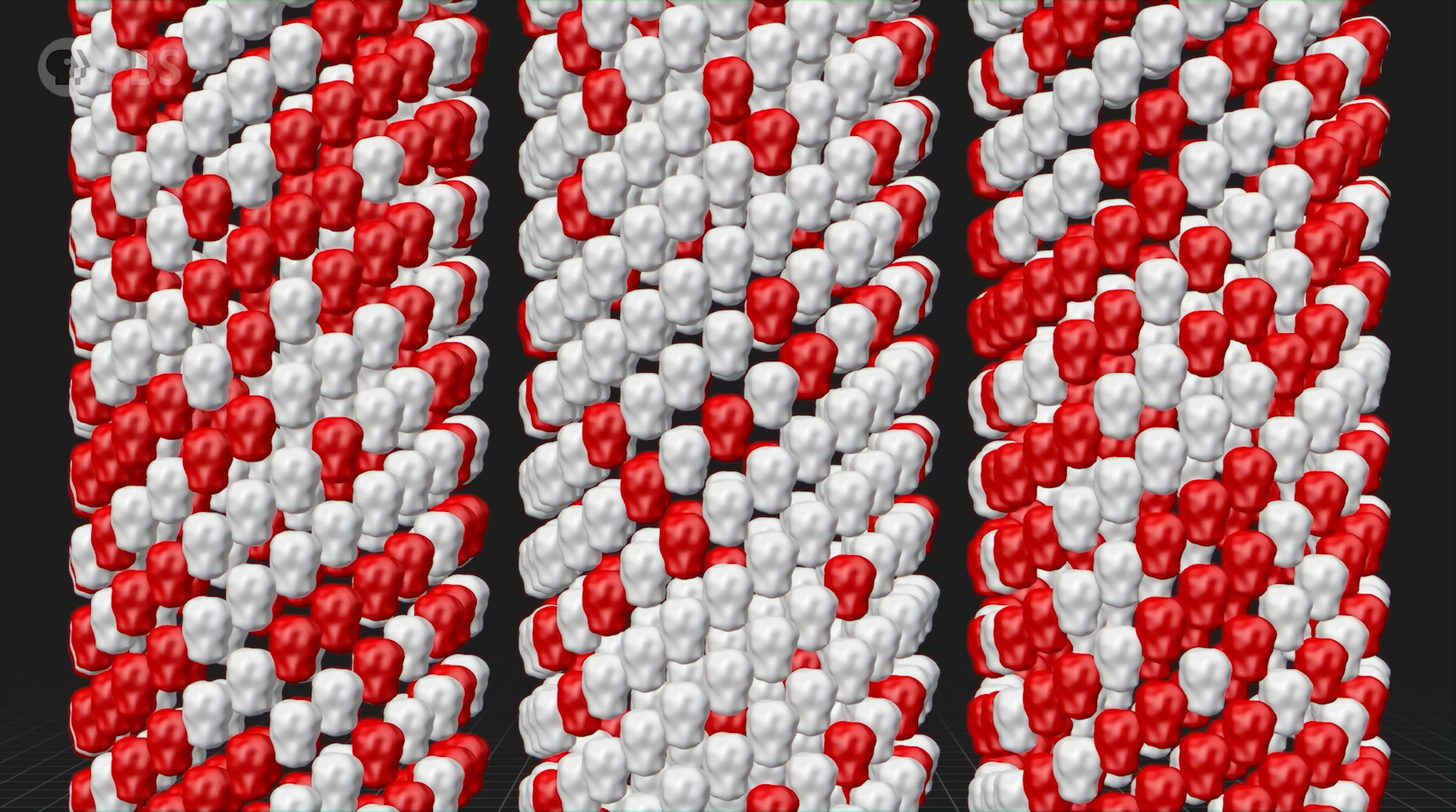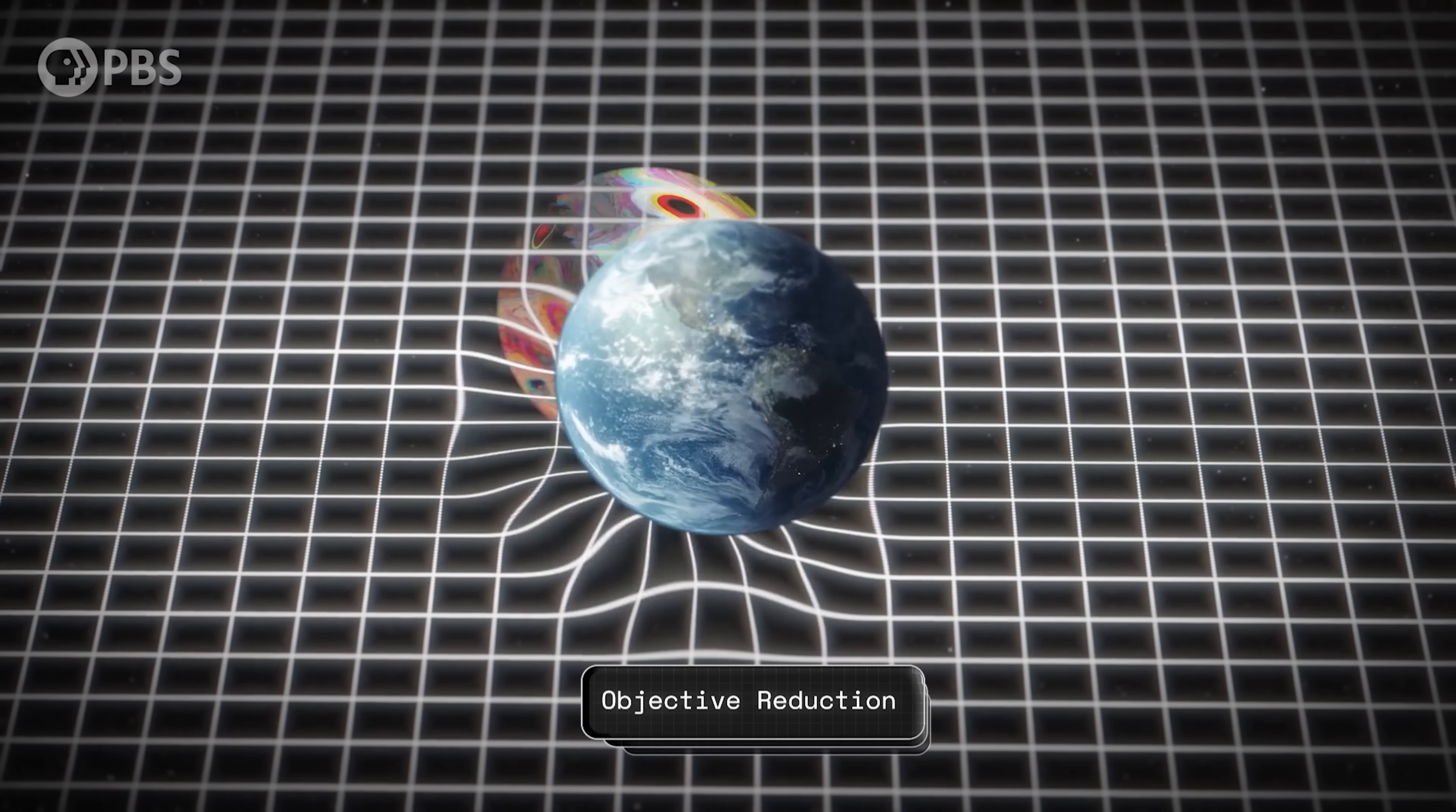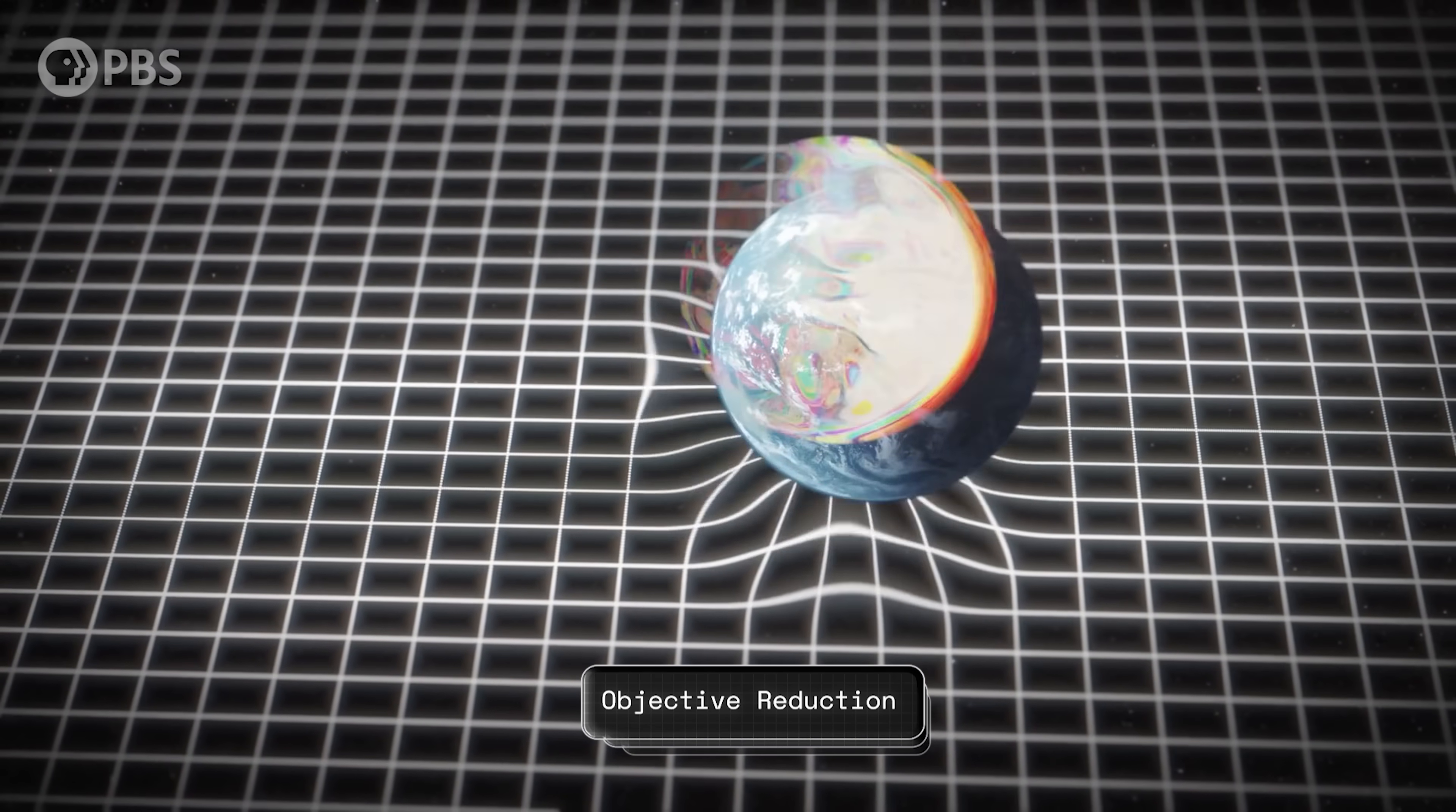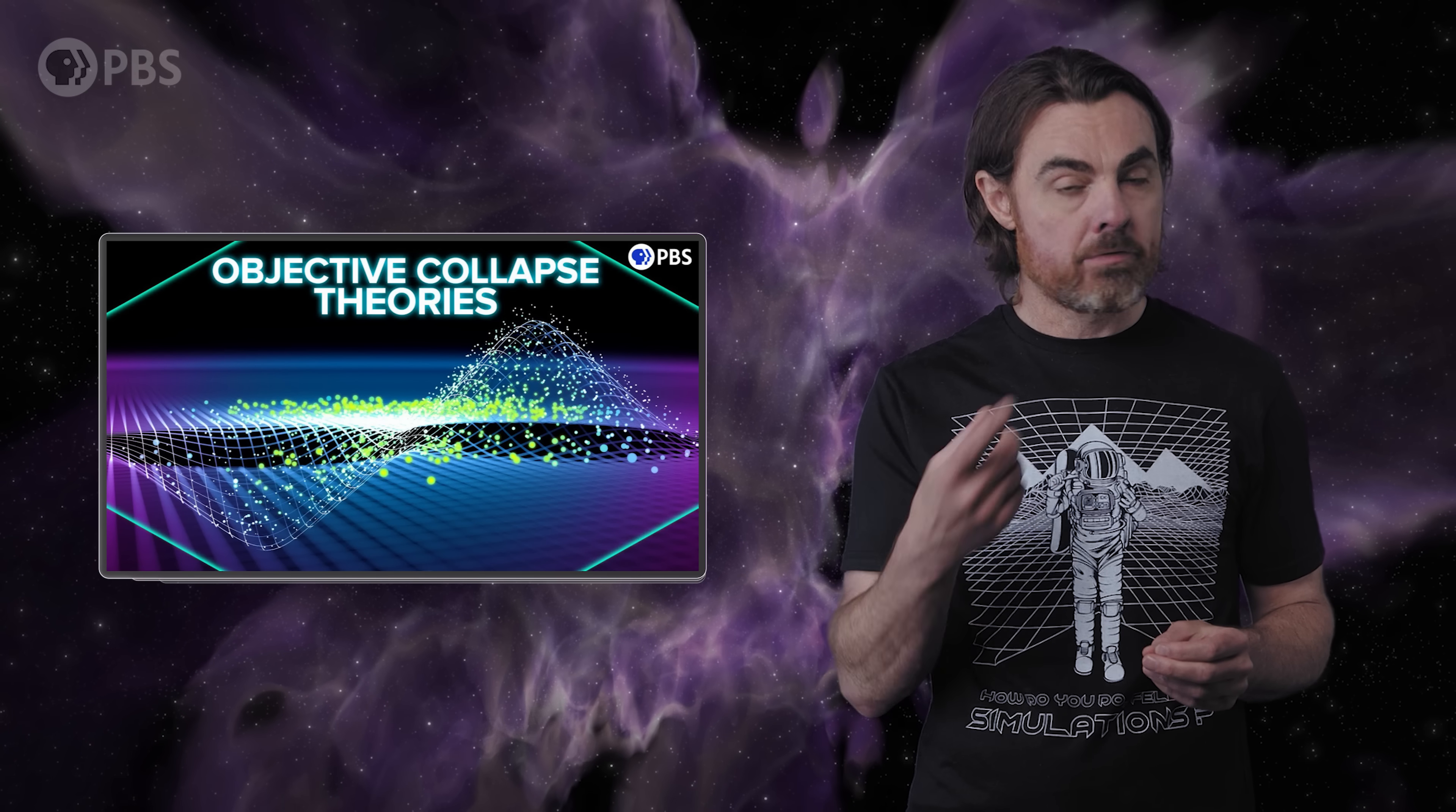And then something happens to collapse this superposition. Some type of measurement causes a single state to be chosen from the many. And it's that moment of collapse that Penrose thinks is a sort of proto-conscious moment. So our conscious experience would then be the sum of these moments happening all the time across the brain. By the way, Penrose also has a mechanism for this wave function collapse. It's called objective reduction. And it happens when the superposition of different spacetime curvatures corresponding to those different quantum states reaches a certain threshold, causing one quantum state to be chosen. And we did an episode on objective reduction if you want the details.